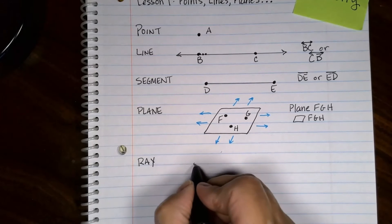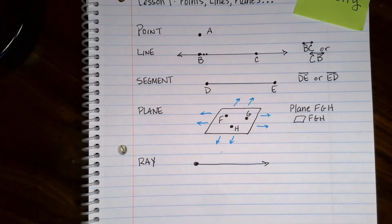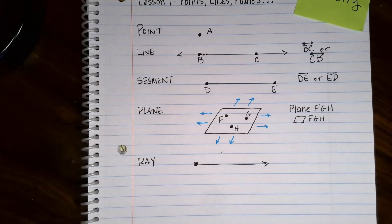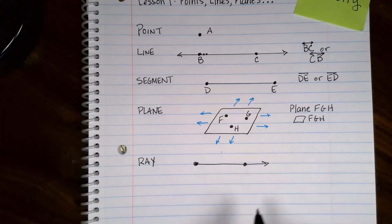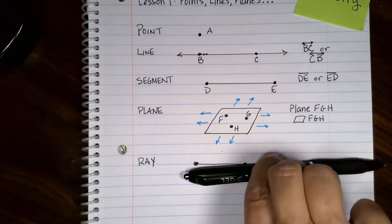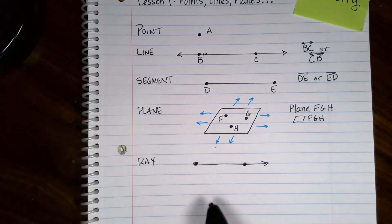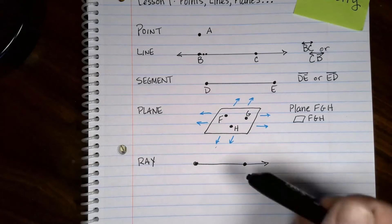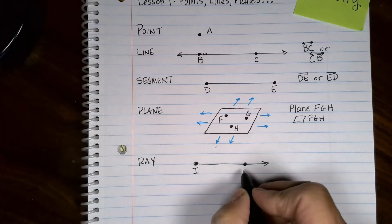Rays have an initial point and then they go off like that, but they go forever in that direction. To name a ray you actually need to have a second point on that ray. Here's the reason: you could have anything starting here but you don't know which direction it's going. If you're talking about this one, there'll be a point on the ray somewhere. This one will be I and this one will be J.